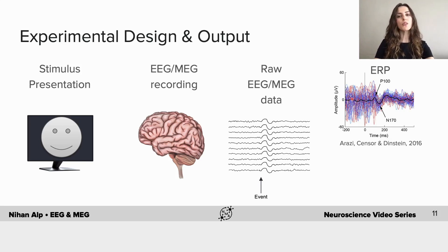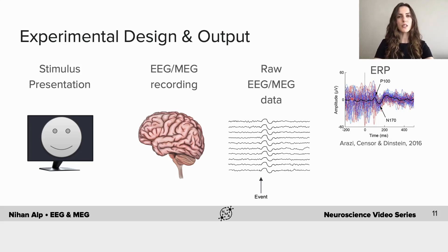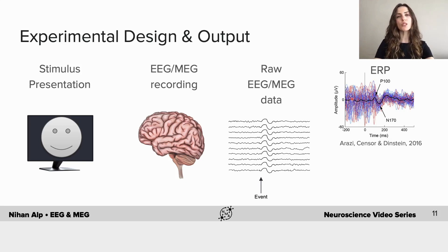We discussed the difficulty in localizing the signal — it's hard to say specifically where these neural activities are coming from. Therefore, even though temporal resolution is high in EEG and MEG, spatial resolution is rather low.